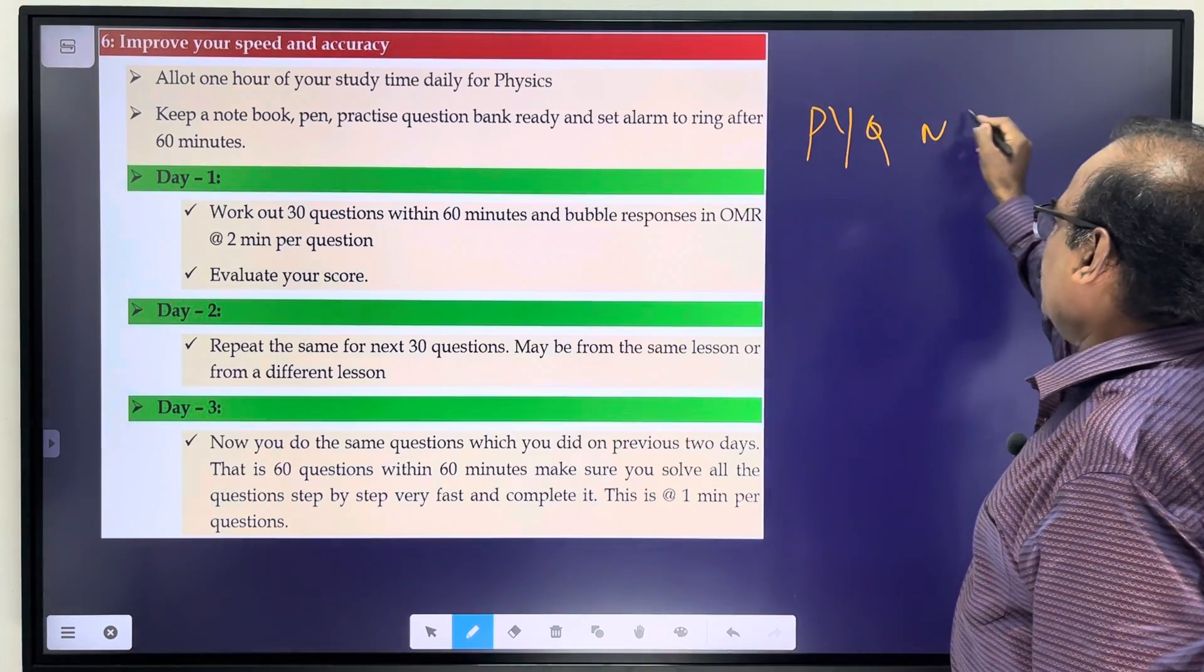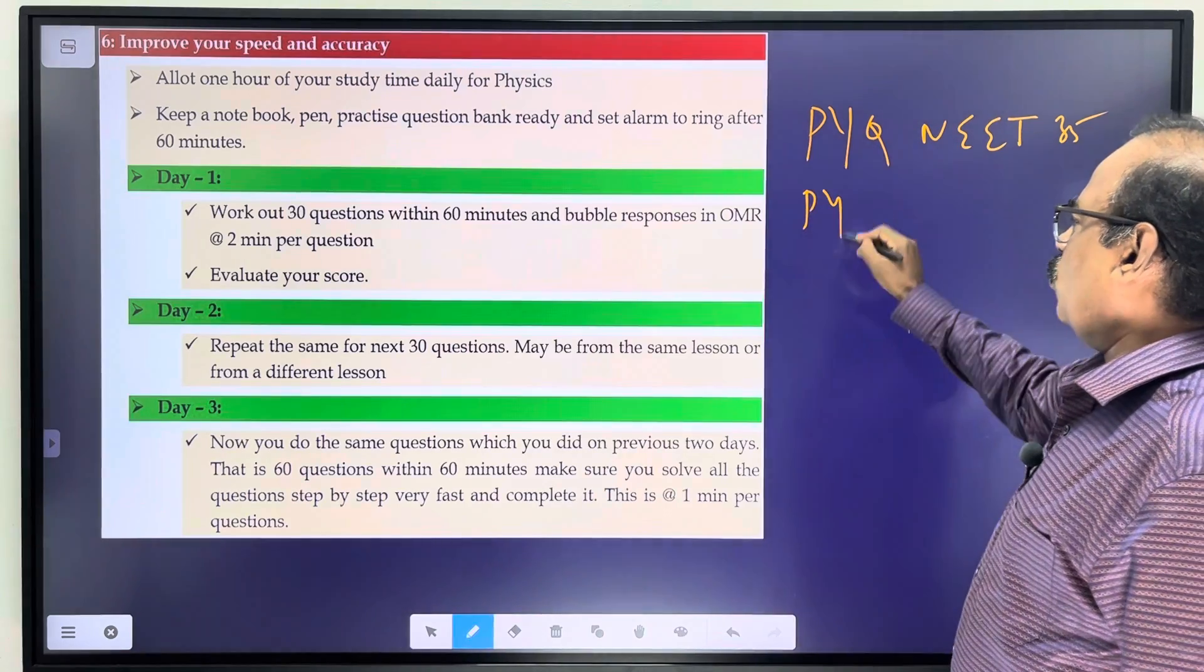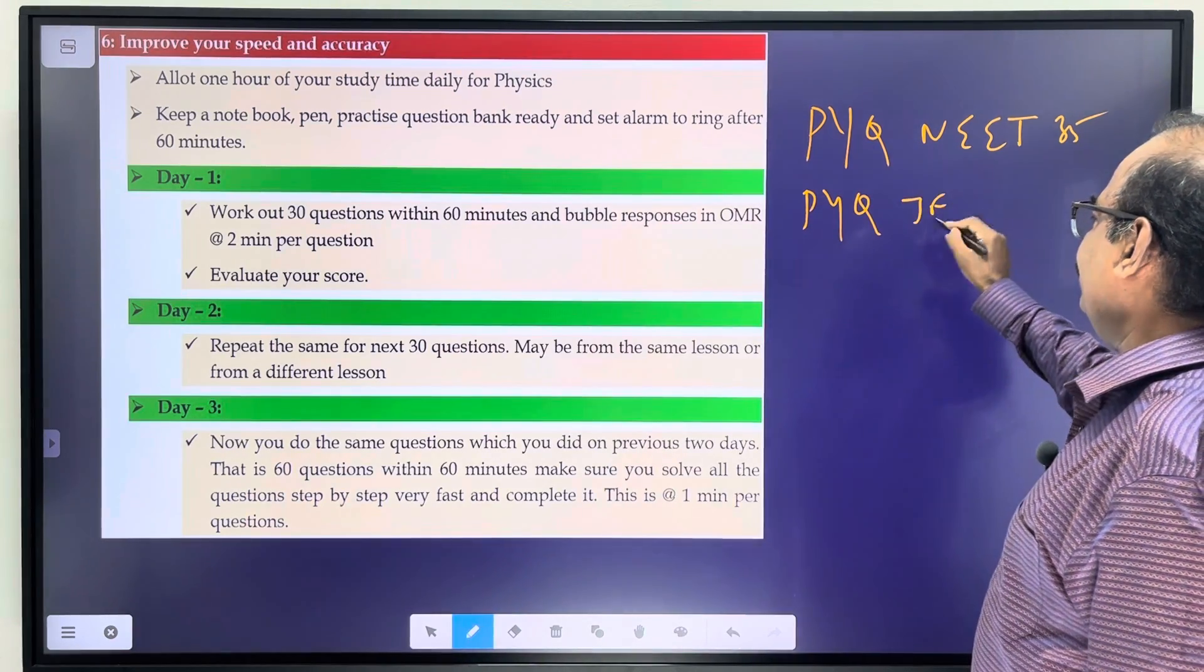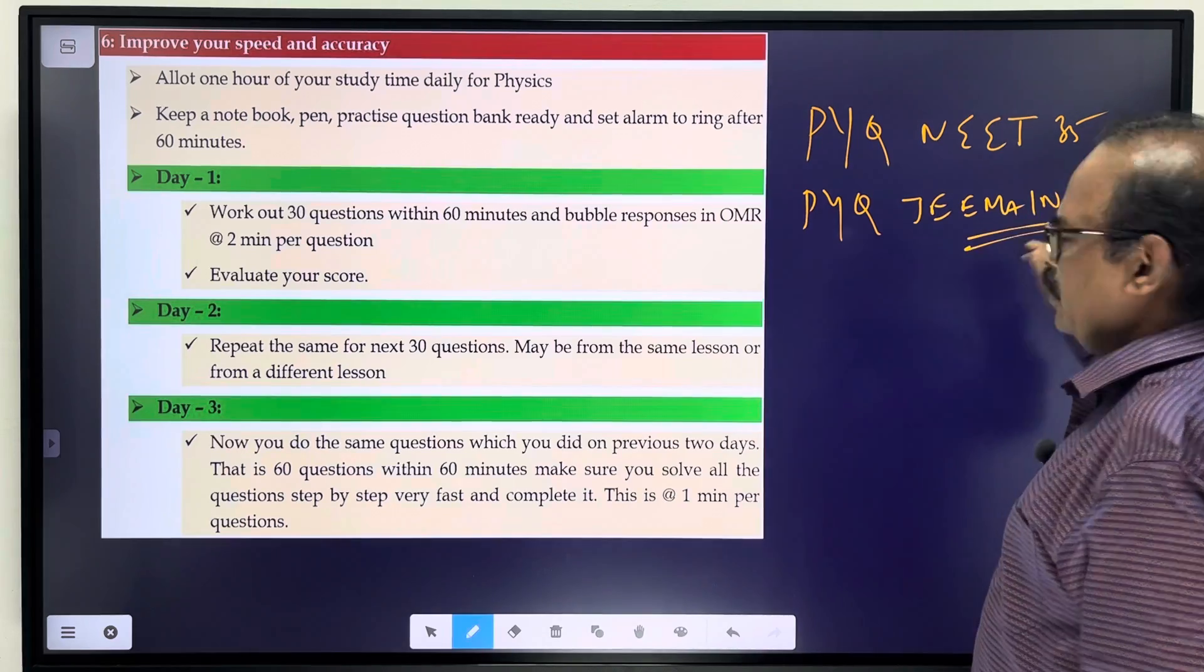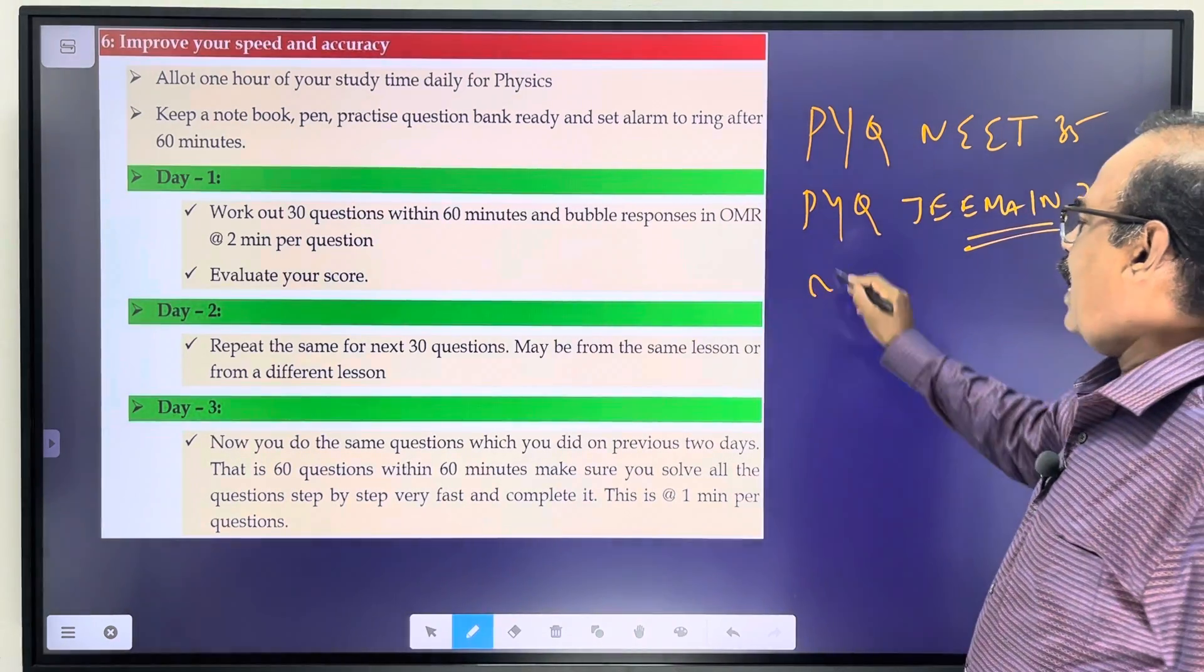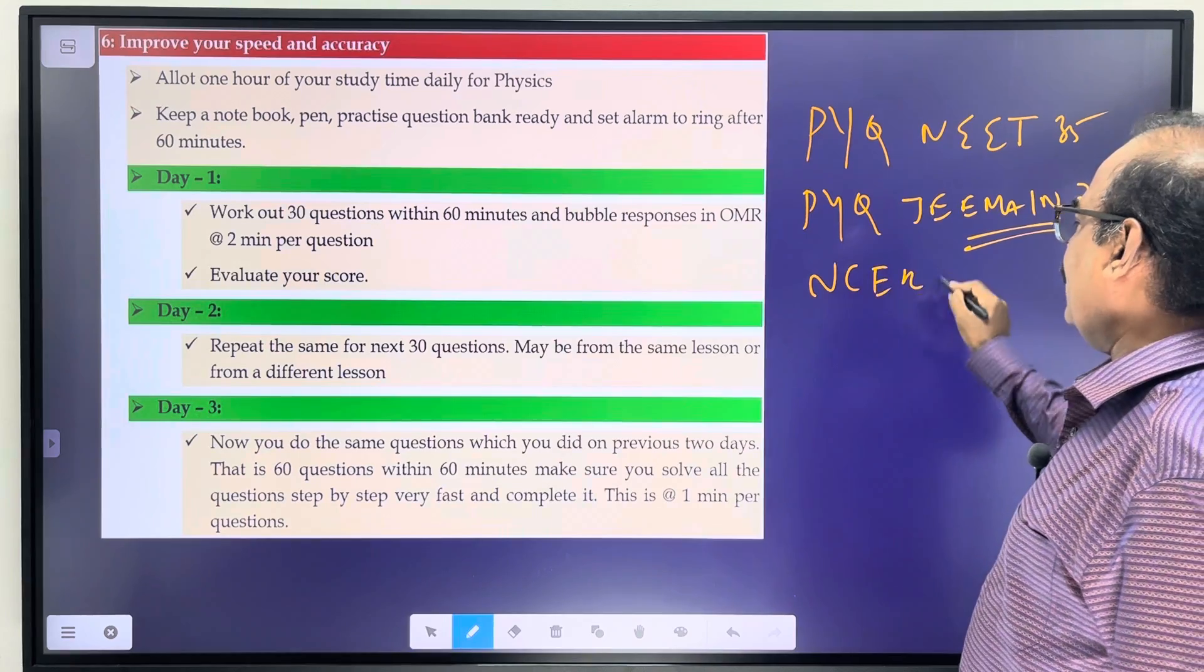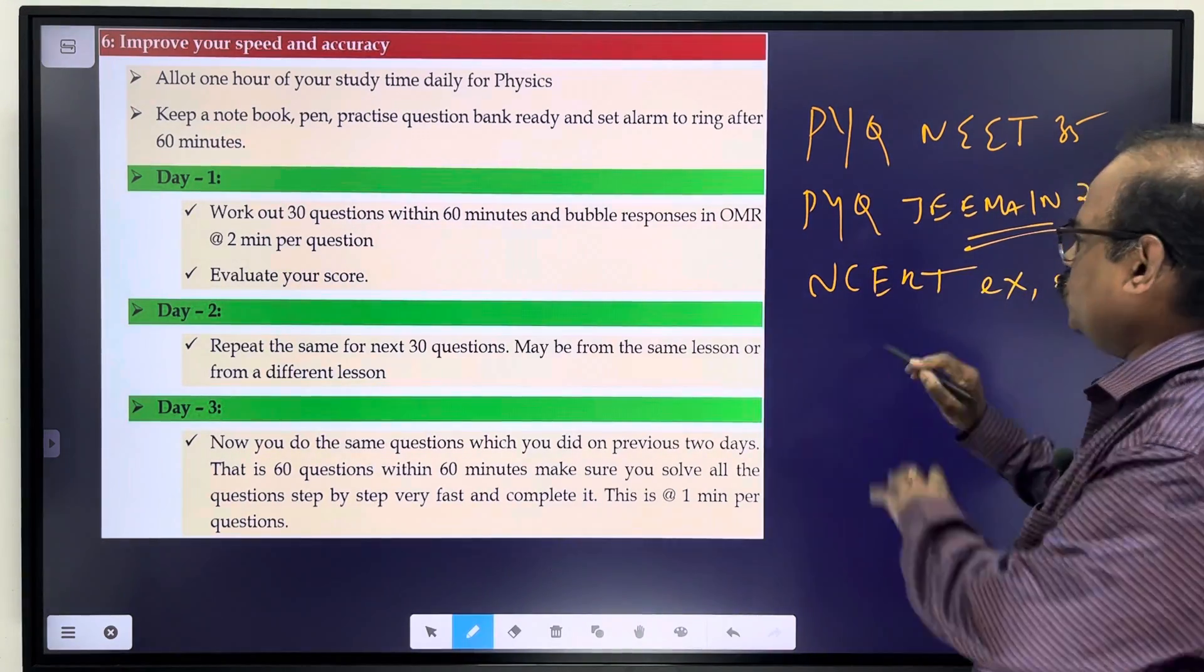The previous year questions - NEET 35 years, previous year questions from JEE Main, JEE Advance, last 21 years. NCERT - four volumes, NCERT examples, exercise and example questions for each lesson.